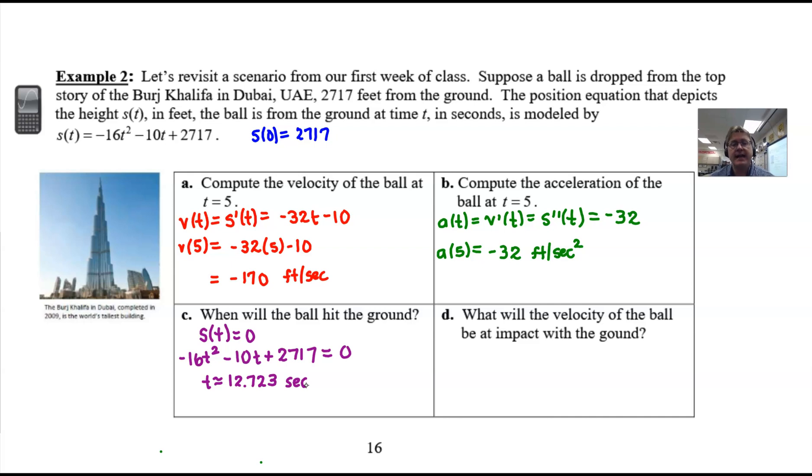Finally, we have one last question to answer: what will the velocity of the ball be at impact with the ground? So it's pretty clear we're going to return to velocity. I'm using red for velocity, green for acceleration.